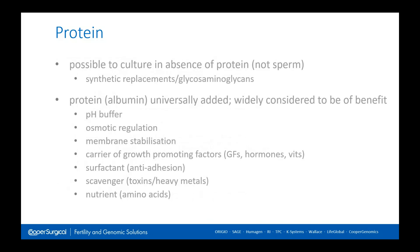In the UK market, which demands CE marking of IVF medical devices including culture media, human serum albumin is the only CE-marked option. The other option previously available was complex proteins — around 80–85% human serum albumin with 15–20% alpha and beta globulins — but that protein supplement is not CE-marked, so isn't available in European markets. HSA is universally added and widely considered a benefit: it acts as a pH buffer, regulates osmotic pressure, stabilises membranes, carries growth-promoting factors, acts as a surfactant and scavenger of heavy metals and toxins, and is itself a nutrient.